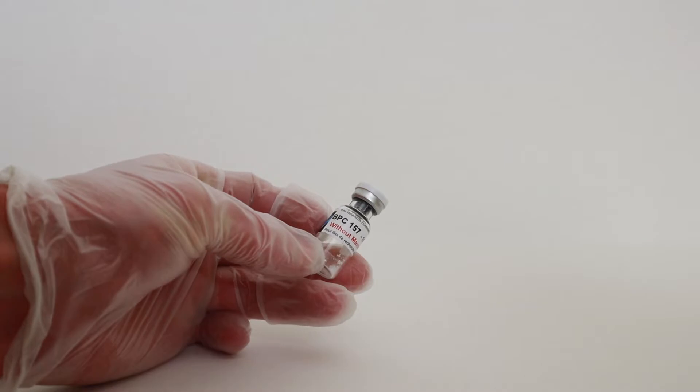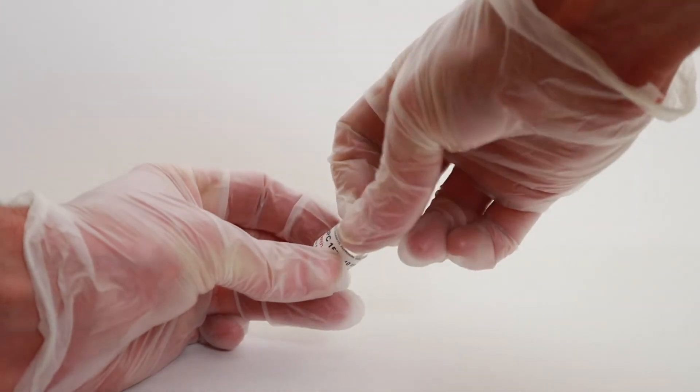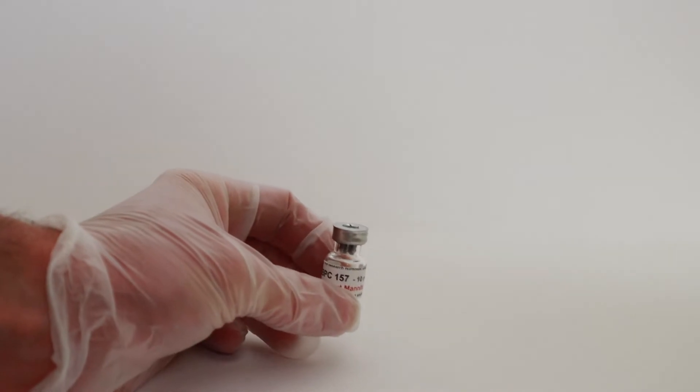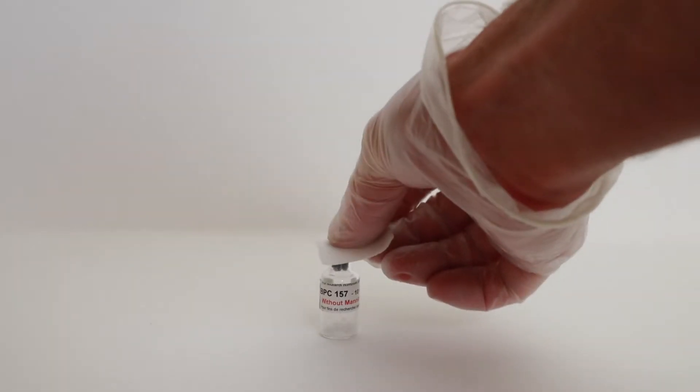Take the peptide and remove the cap from the top, set it down, and swab it with alcohol.